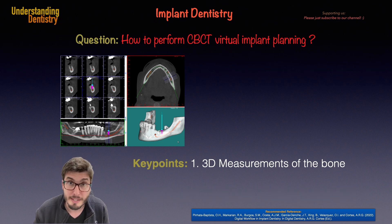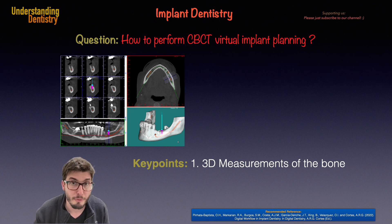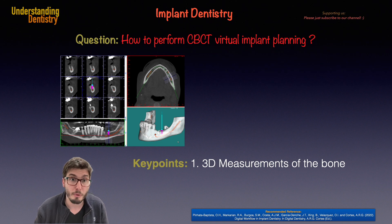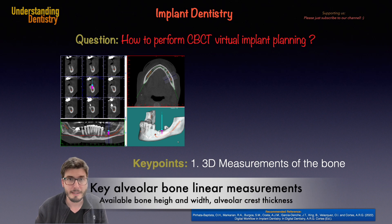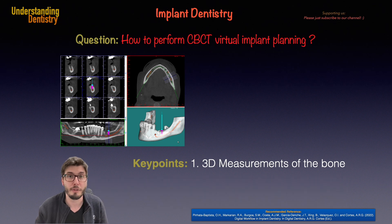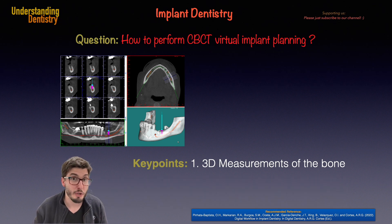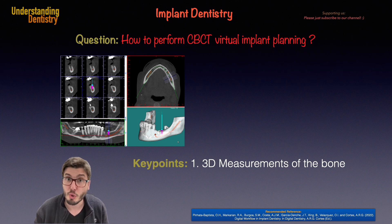The first key point is the 3D measurements of the alveolar bone. So we can perform linear measurements of the bone dimensions to plan our dental implant. The two most important measurements are the bone height available and the bone width available — the buccal-lingual width at the level of the alveolar crest. We can do those linear measurements with precision because CBCT has no significant distortion.